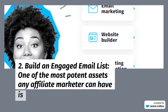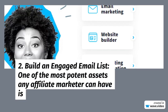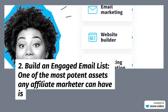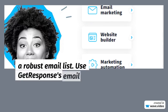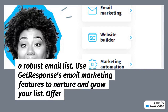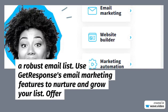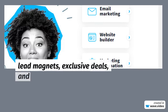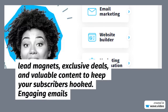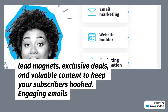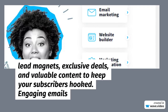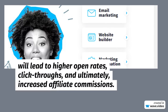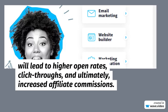Number two: Build an engaged email list. One of the most potent assets any affiliate marketer can have is a robust email list. Use GetResponse's email marketing features to nurture and grow your list. Offer lead magnets, exclusive deals, and valuable content to keep your subscribers hooked. Engaging emails will lead to higher open rates, click-throughs, and ultimately increased affiliate commissions.